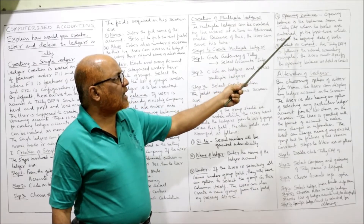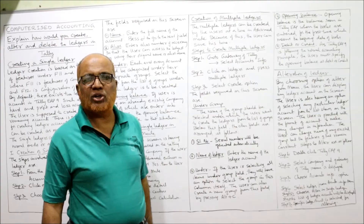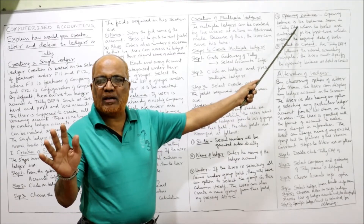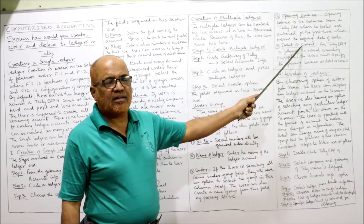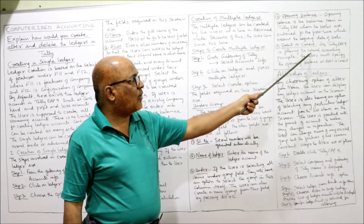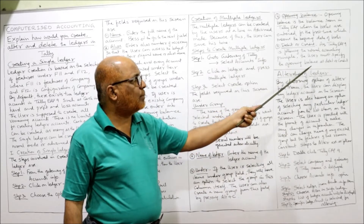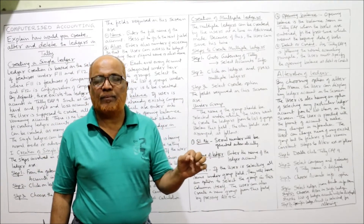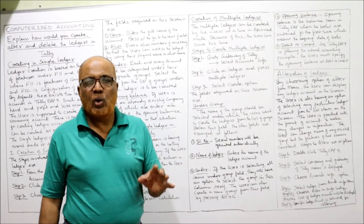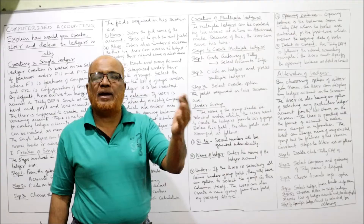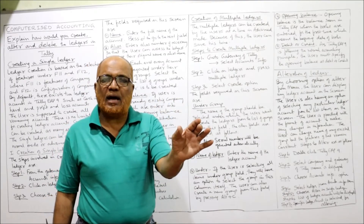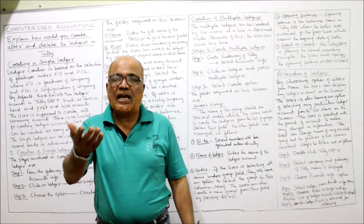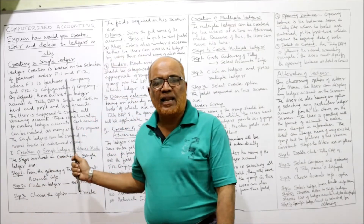Opening balance is the balance seen in Tally ERP when books are entered for the first time, which means the beginning date of books. If there is a beginning balance it will come, otherwise leave it blank. Since Tally ERP 9 follows normal accounting principles, the user must specify the opening balance as debit or credit. Some accounts may show debit balance and some credit balance — accordingly, enter the amount in the debit or credit column.